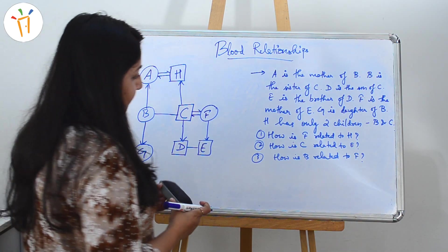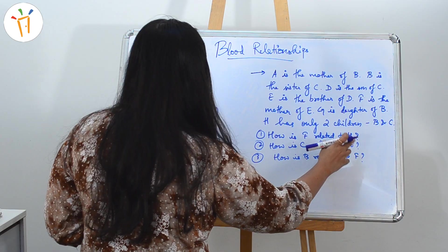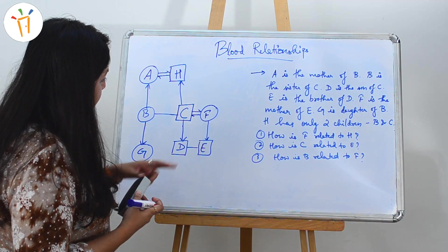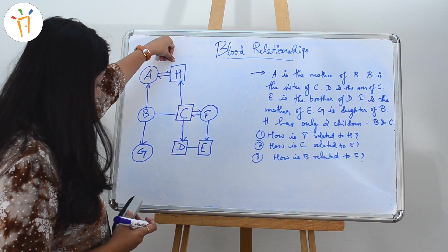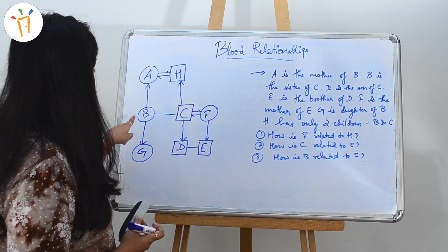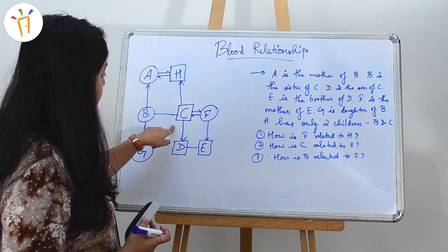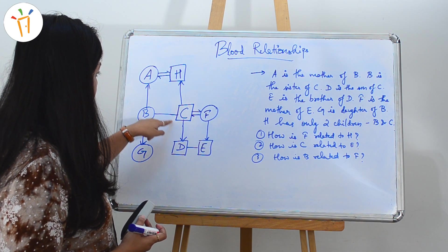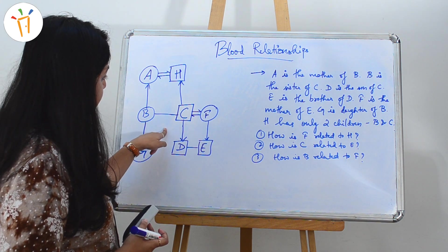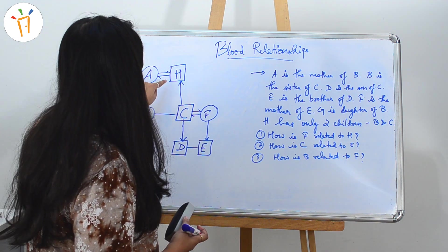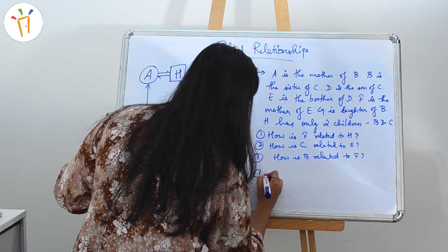Let's move on to the questions. First: how is F related to H? F is here and H is here. We know B and C are kids of H, and C is the son. H is the father and F is the wife of C, so F will be the daughter-in-law of H. The answer is daughter-in-law.